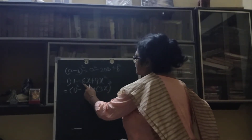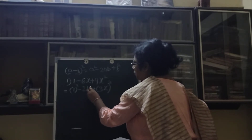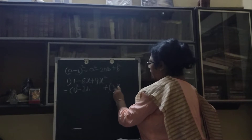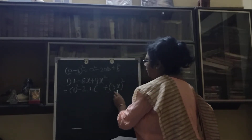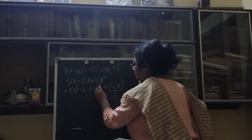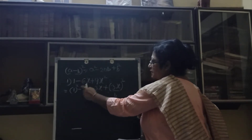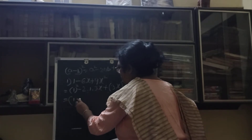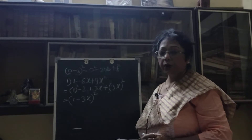Here it is 6x, so we will write minus 2ab: 2 into a means 1, into b means 3x, so 2 into 1 into 3x equals 6x. You check: minus 6x matches. So we can write this as 1 minus 3x whole square — this is your answer.